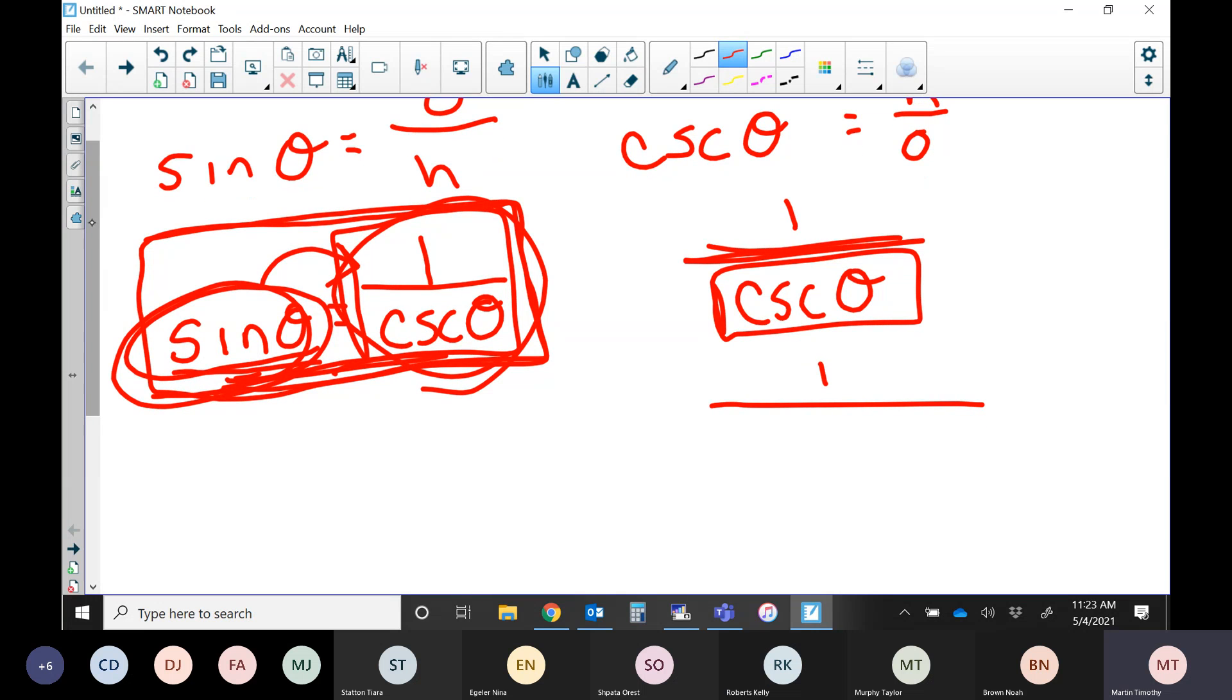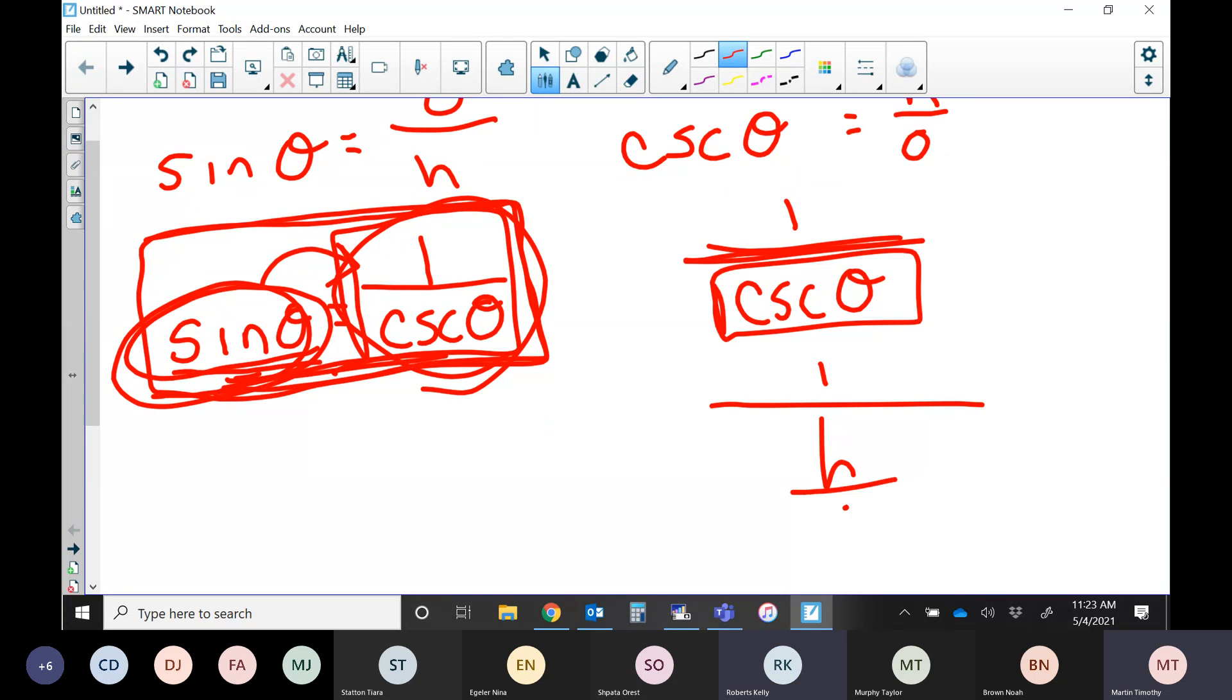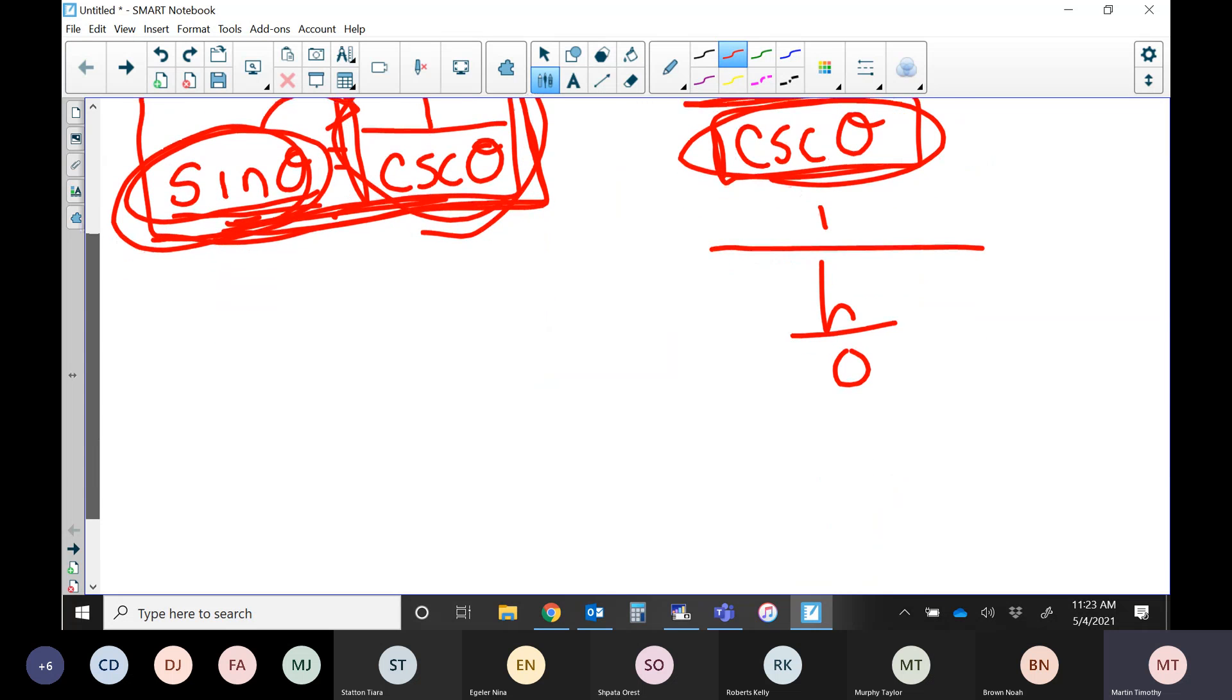It's on there right now. What? Hypotenuse over opposite. So let's write that as hypotenuse over opposite. That right there, all I do is I took this out, and I put what it equals in its place. Totally legal, correct? Does everybody understand that?